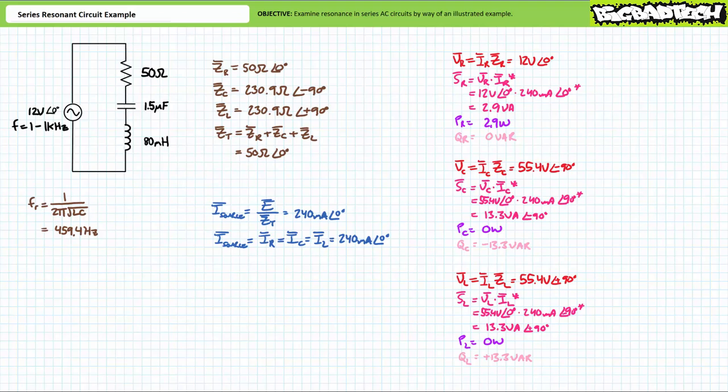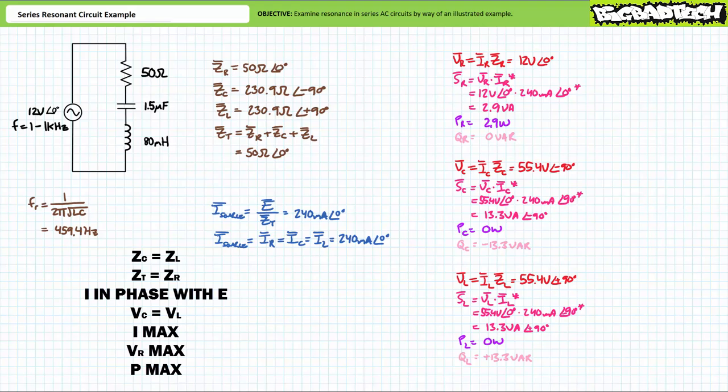Let's take a moment to review the resonant condition. At conditions of resonance we should expect the following: the impedance magnitude of the capacitor will be equal to that of the inductor yet of opposite polarity; total impedance will be equal to solely the resistive component ZR; source current will be in phase with supply voltage; voltage across the reactive capacitor and inductor will be equal in magnitude yet perfectly out of phase with one another. At times, the voltage across these reactive elements can be exceedingly high. Source current will achieve a maximum magnitude at conditions of resonance. Given voltage across the resistor is directly proportional to the current through it, we should also expect voltage across the resistor to peak at the resonant frequency.